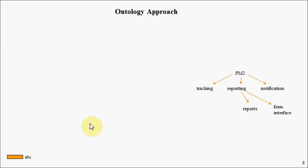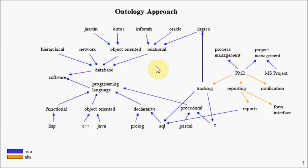Let's look at another approach to developing a personnel management system — one that uses what I'll call an ontology approach. Here's our system — this tracking system. Imagine taking it and overlaying it with a knowledge layer, basically overlaying it with an ontology. So we see this tracking system consists of Ingress database code, SQL code, and C code.